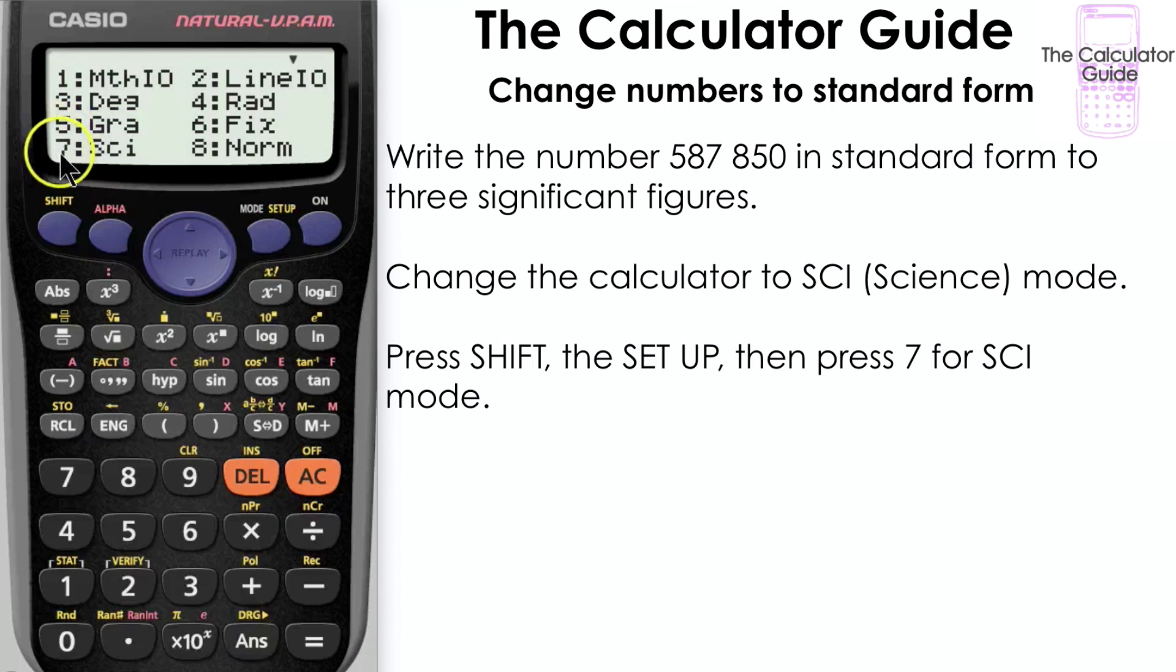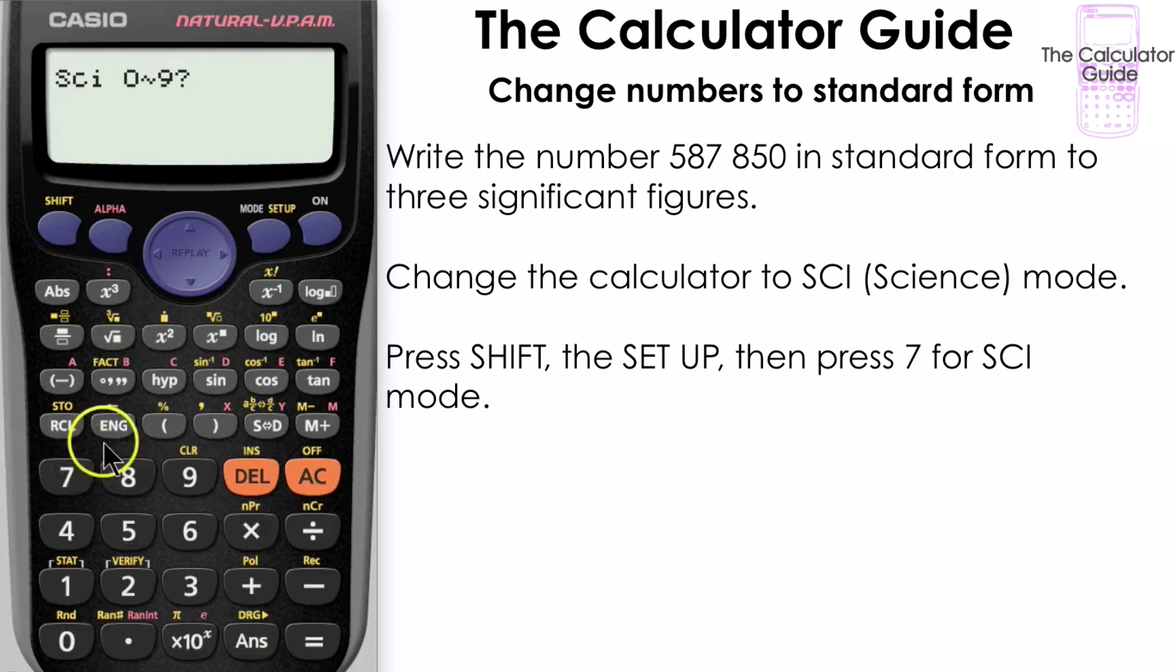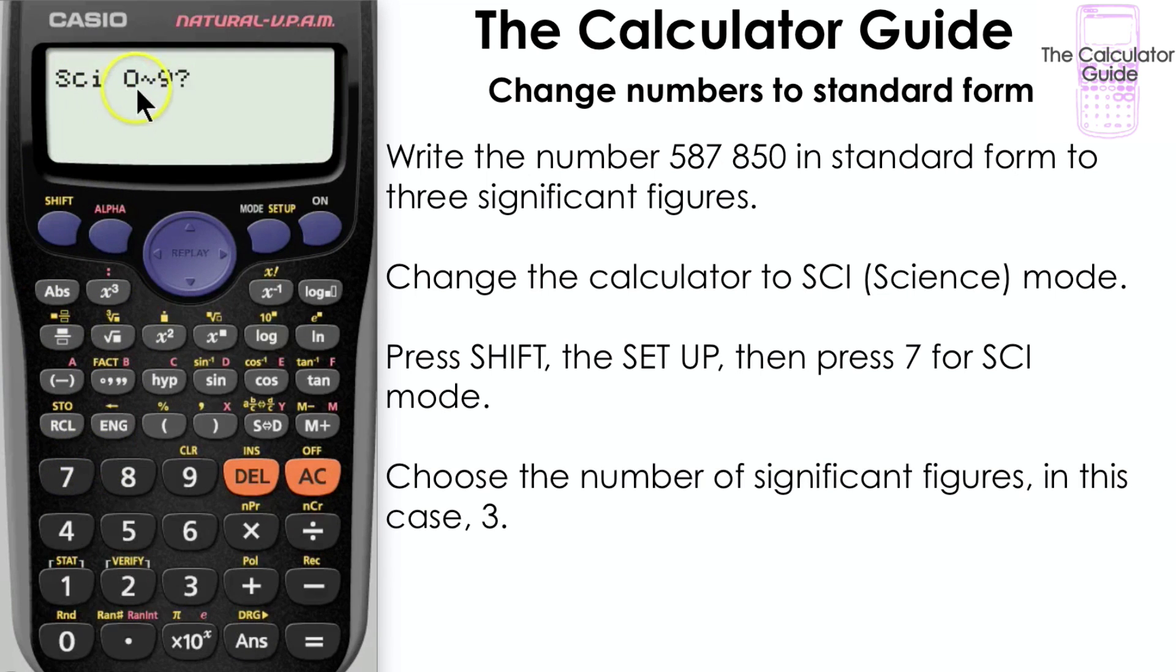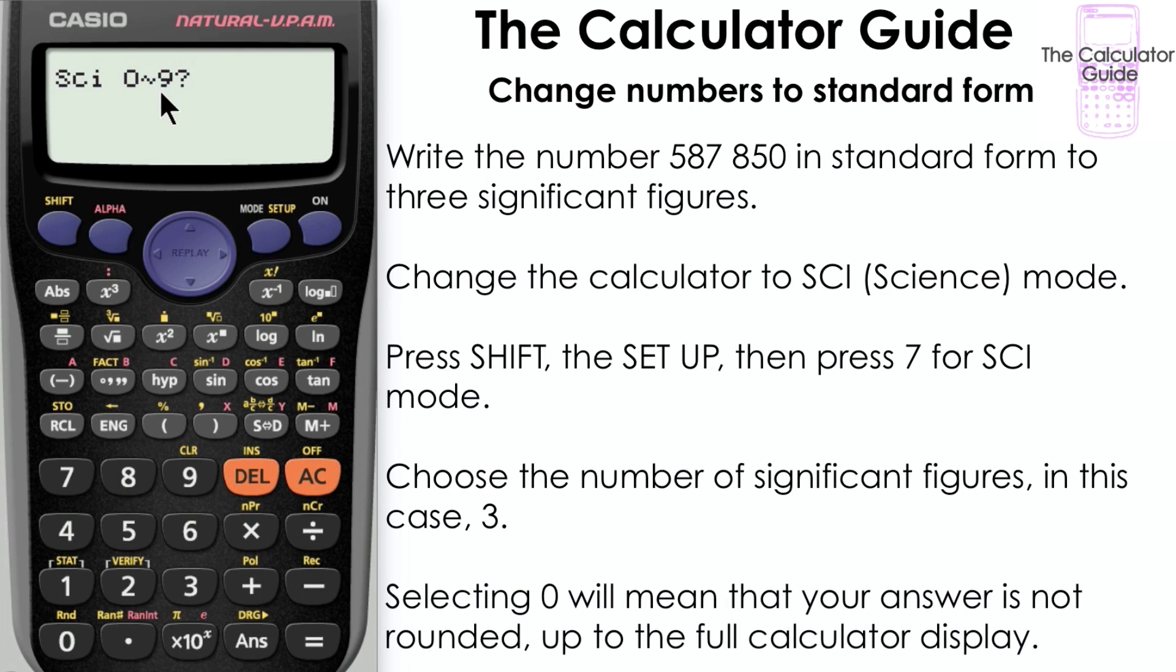Press SHIFT, then SETUP, and then press 7 for SCI mode. We then need to choose the number of significant figures, in this case three. If we select zero at this point, that will mean that the answer will not be rounded up and it will go to the full calculator display. Notice how we have SCI displayed at the top here.